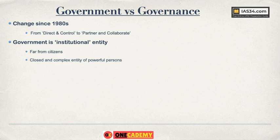Government is an institutional entity — it is an institution and it is far from citizens. It is a closed and complex entity of very powerful persons, approaching whom is very difficult for citizens. This concept has been changing since the 1980s. Earlier it was direct and control, in the sense that the government directed and controlled citizens — what they can do and cannot do. It was not a service delivery mode; it was mostly a paternalistic approach.